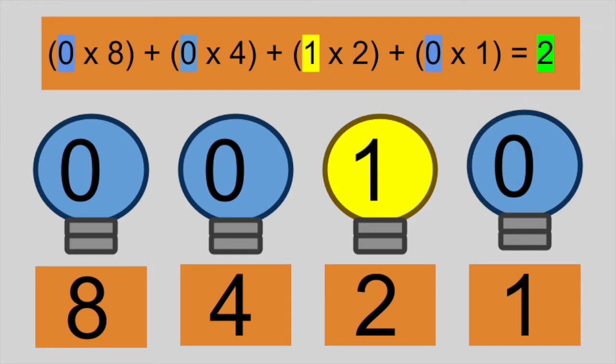To represent the value 2, we turn on the second bit only. What we have is 1 times 2 plus 0 times 1.